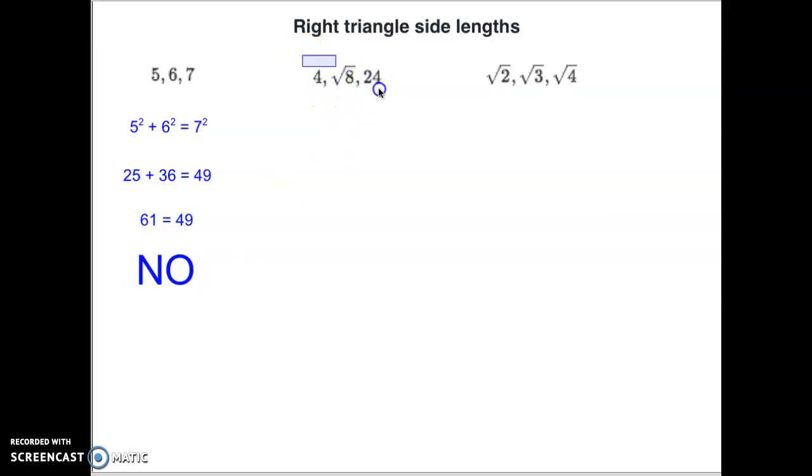Okay, let's move on to this example right here. Does 4, the square root of 8, and 24 work? So we plug that in to our Pythagorean theorem. We've got 4 squared, the square root of 8 squared, and 24 squared. Well, 4 squared is 16. The square root of 8 and the square cancel each other. So you're just left with an 8 there. And 24 times 24 is 576. I think you can kind of tell this one already, but 16 plus 8 is only 24. 24 certainly does not equal 576. So that one doesn't work either.